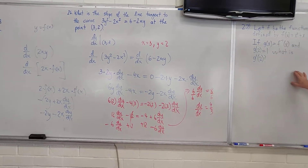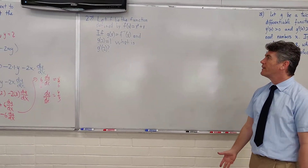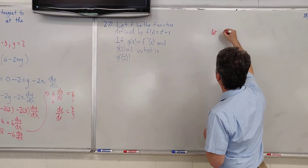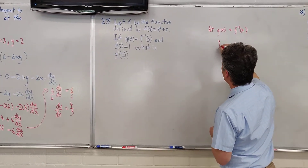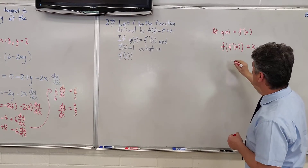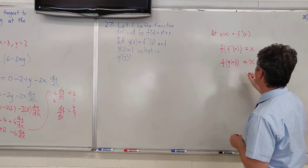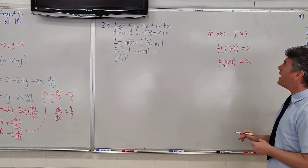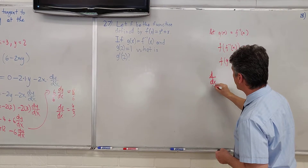We now move on to question number 27. What I need to review is how to find the derivative of an inverse function. Let g of x be equal to f inverse of x. You should remember that f of f inverse of x is equal to x, which also means that f of g of x is equal to x. Now I'm figuring out what the derivative with respect to x of f inverse of x is, so we take the derivative with respect to x on both sides.